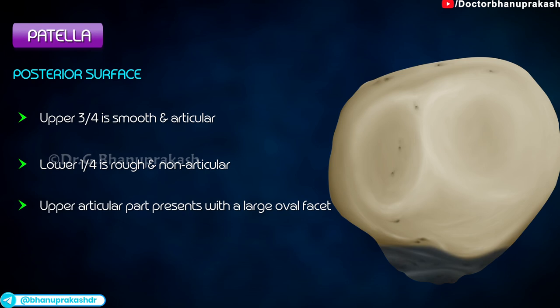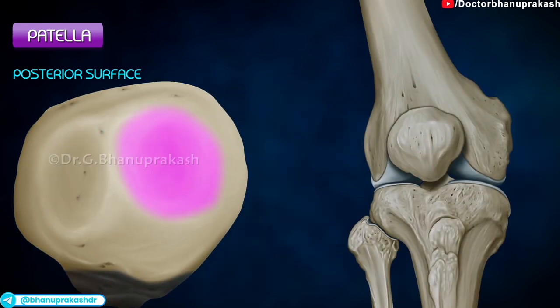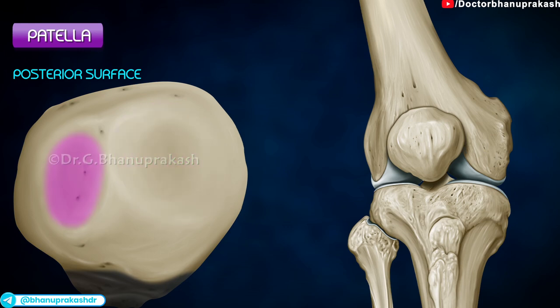This facet is divided into lateral and medial parts by a vertical ridge. The lateral part is larger and articulates with the lateral condyle of the femur. The medial part articulates with the medial condyle of the femur.